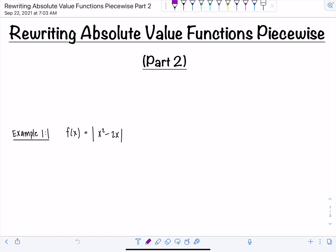Before we get started, let's remember the definition for absolute value of x. Absolute value of x is equal to x if x is greater than or equal to zero and the opposite of x if x is less than zero.